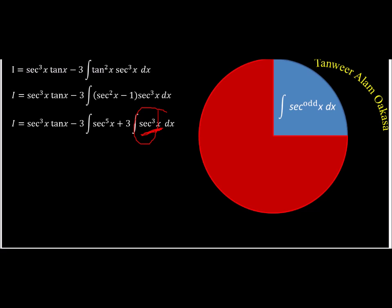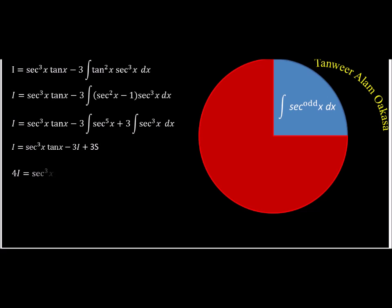Collecting I on both sides: 4I = sec³(x)tan(x) + 3·[integral of sec³(x)], and substituting the known result for integral of sec³(x) gives the final answer. To summarize the session: for tan^m · sec^n, we use different methods depending on even/odd powers. For only tan or sec, powers even are easy; tan odd is manageable; only sec to power odd requires integration by parts.